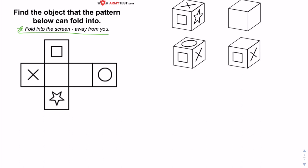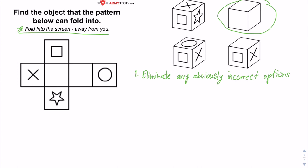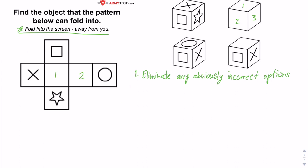With these types of questions, the first thing I like to do is eliminate any obviously incorrect options. From looking at this, one option sticks out to me because it has three blank faces, but our map or projection only has two blank faces — therefore that option is incorrect.